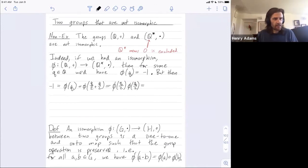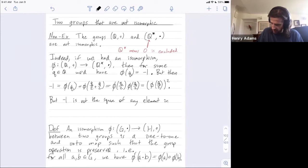Another way to write a number times itself is just that number squared. So do you all see the contradiction now? But negative 1 is not the square of any element in Q star. There's nothing that phi of q over 2 could map to in Q star that could squared equal negative 1. No rational number squared is negative. Every rational number squared is non-negative.